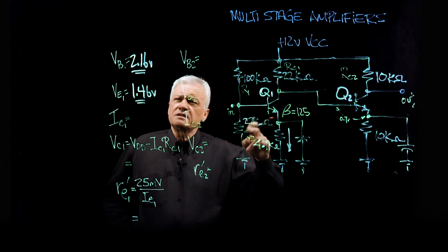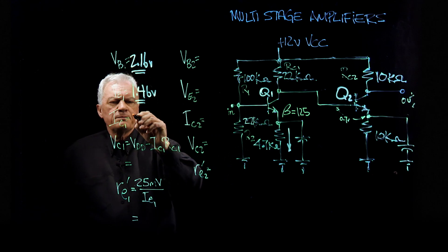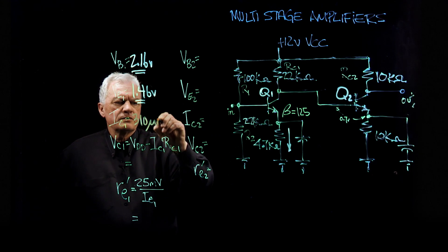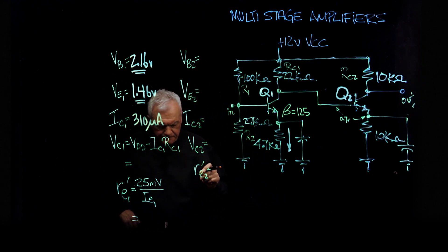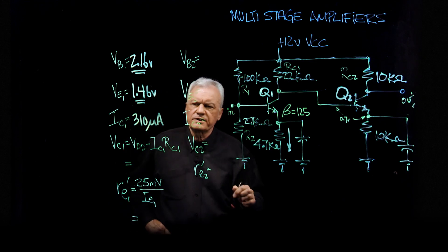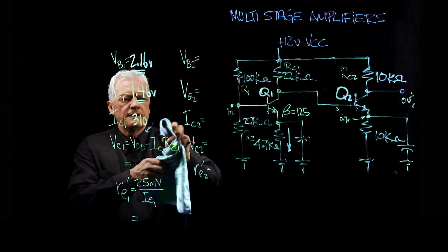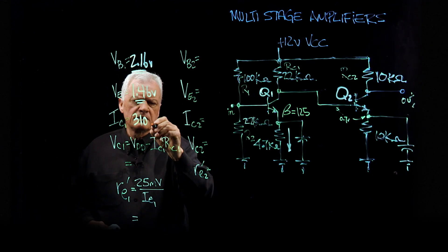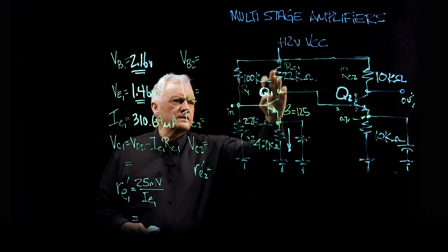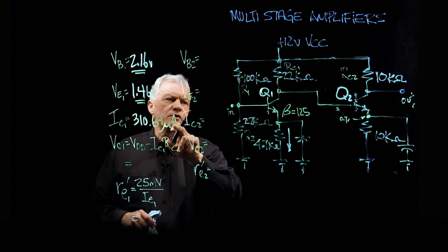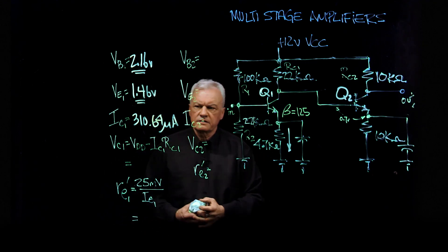So what we need to do is we need to divide this 1.46 volts here by this 4.7K ohms here. And we'll come up with 310 microamps. And please ensure that you - we could take it a little further than that. It was 310.64 the last time I looked at that. So let's just correct that a bit. Round off errors may cause some future problems.